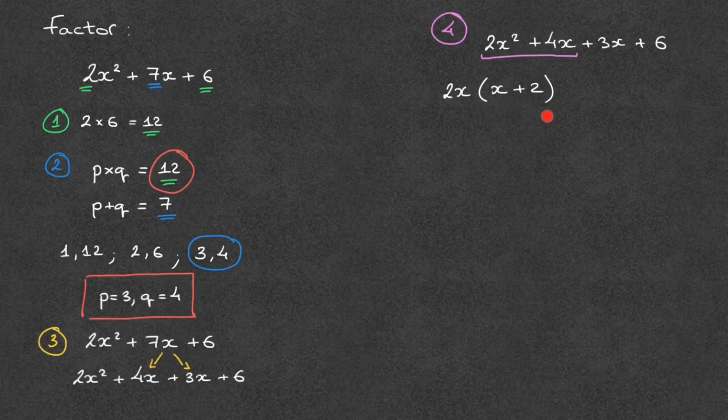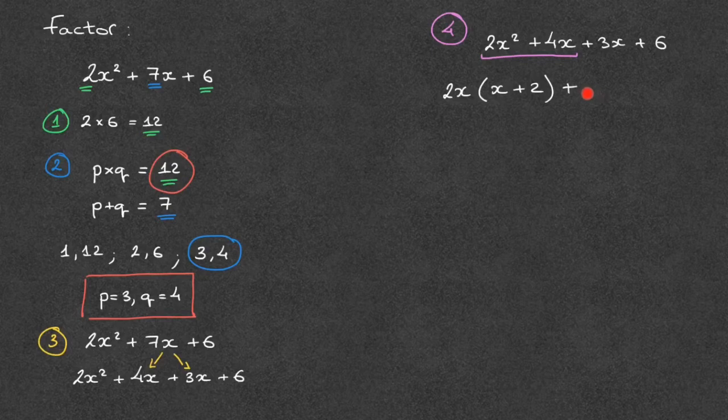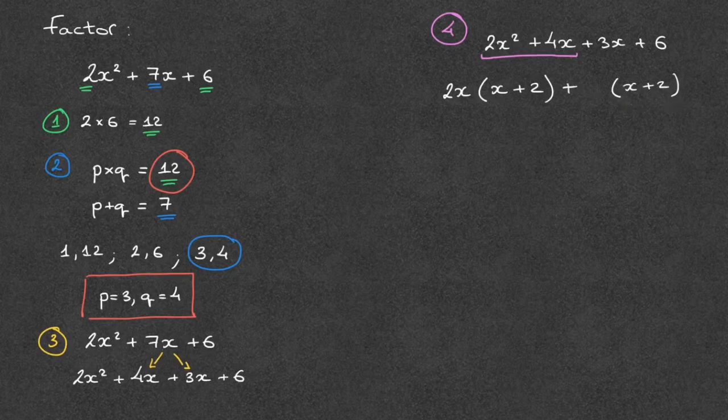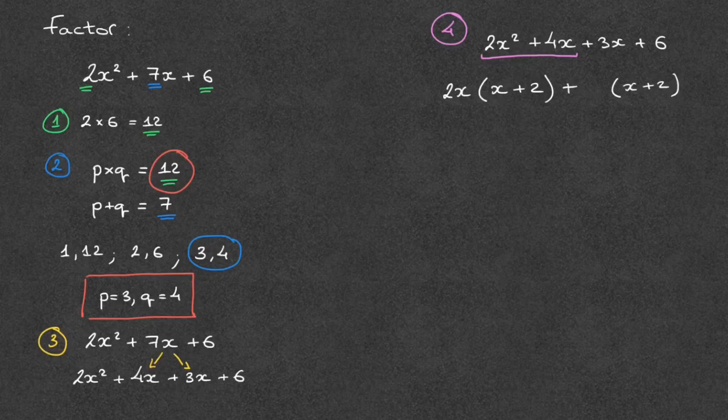I start by copying this pair of parentheses here, this x plus 2. And I write plus. I then leave a little blank space here, because I'm going to write a number there later. And I then copy this pair of parentheses. So that was x plus 2. And at this stage, I write this x plus 2 without thinking at all. All I'm making sure of is that it's the same pair of parentheses as the one that I have here.